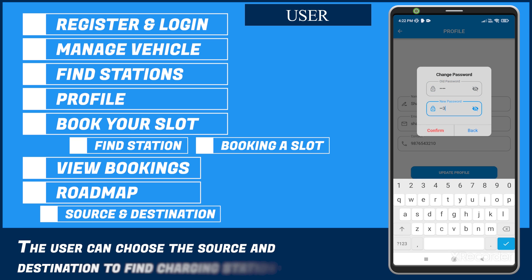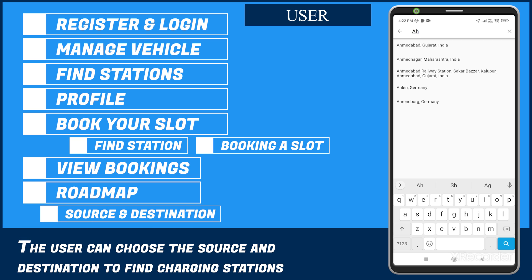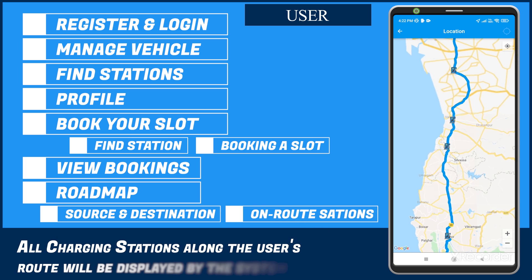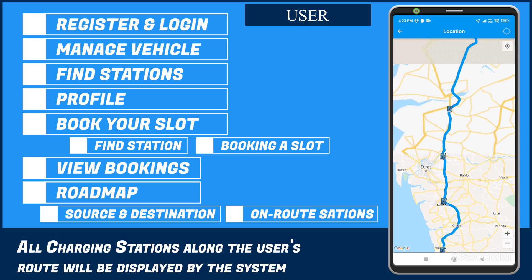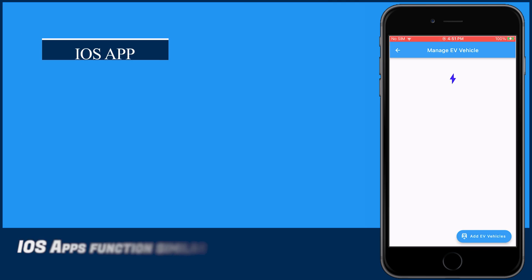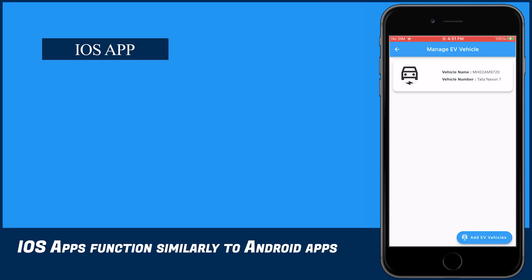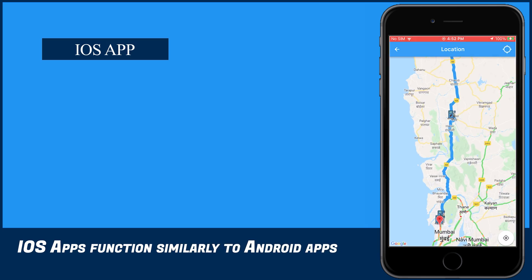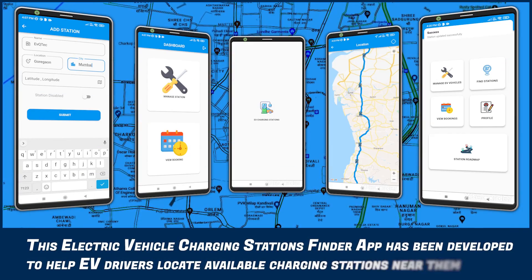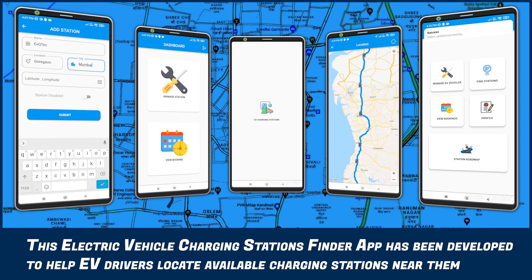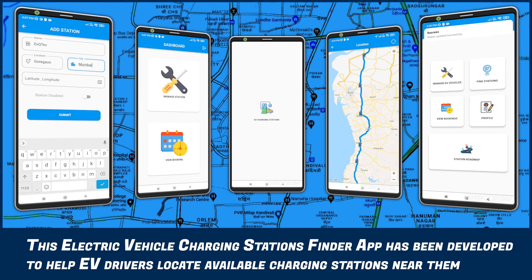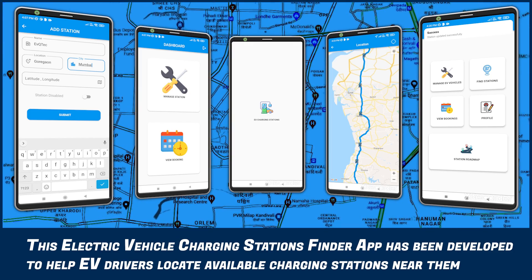The user can choose the source and destination to find charging stations. All charging stations along the user's route will be displayed by the system. iOS apps function similarly to Android apps. This electric vehicle charging station finder app has been developed to help EV drivers locate available charging stations near them.